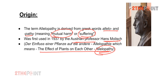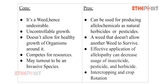Hans Molisch used the term allelopathy to describe the biochemical interaction by means of which a plant inhibits the growth of neighboring plants. Now let's discuss the pros and cons of allelopathy. First, the benefits: allelopathy can be used for producing allelochemicals as natural herbicides or pesticides.